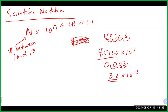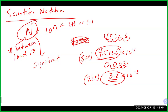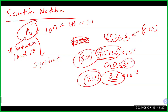When you write a number in scientific notation, all the numbers that come before the 'times 10' part are significant figures. That means 4.5326 times 10 to the 4 has 5 significant figures, and 3.2 times 10 to the minus 3 has 2 significant figures. When converting between decimal form and scientific notation, you shouldn't lose significant figures — our original number had 5, so we keep all 5; our original number had 2, so we keep only 2.